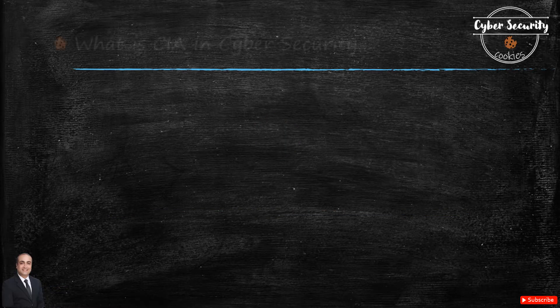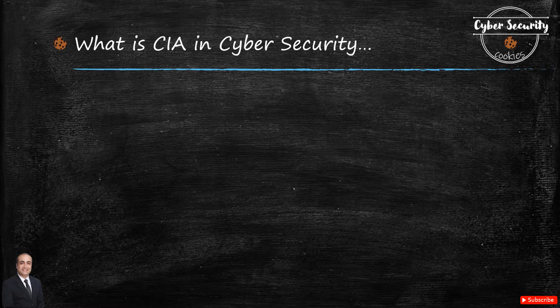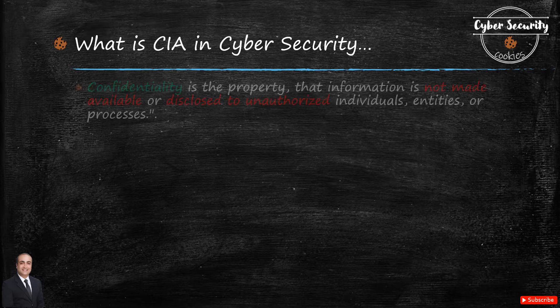Hey, hi friends! Welcome to Cybersecurity Cookies. This is our next bite for the week. Today we are going to discuss an important concept about information security which is known as CIA — it stands for Confidentiality, Integrity, and Availability. This is one of the fundamentals which we all need to know. On top of that, I will be taking another term called non-repudiation. So let's start understanding what CIA is.